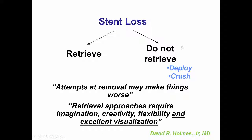An important component about how to manage stent loss is that you don't always have to retrieve it. In this particular case we had to, because it was in the left main. But in many cases, if the stent is lost in a non-critical location, it can be either deployed or crushed with another stent. As David Holmes used to say, attempts at removal may actually make things worse.